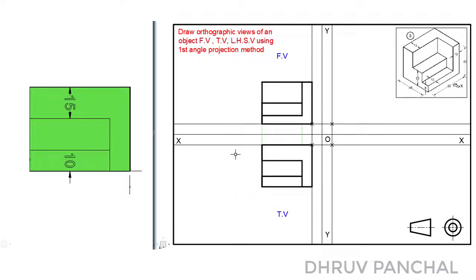As per the first angle projection method, we have to draw the left hand side view at the right side of the front view. To draw the left hand side view, we have to transfer the projections from the top view. For that, with the help of a protractor, from point O draw a line of any length at an angle of 45 degrees.